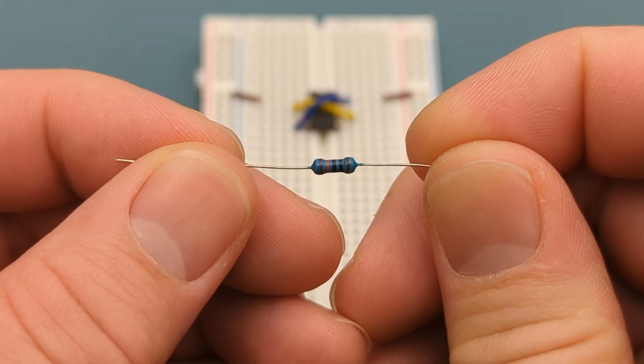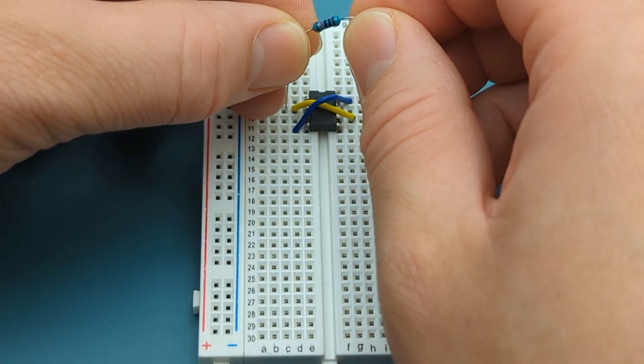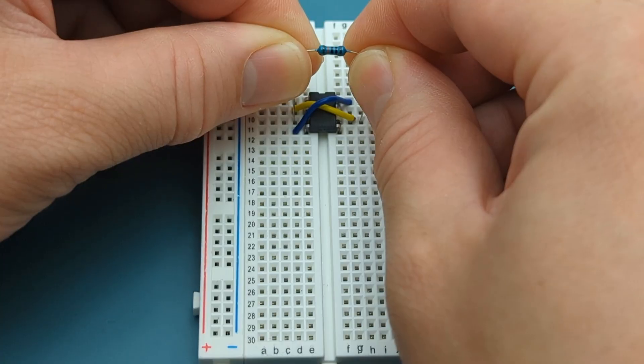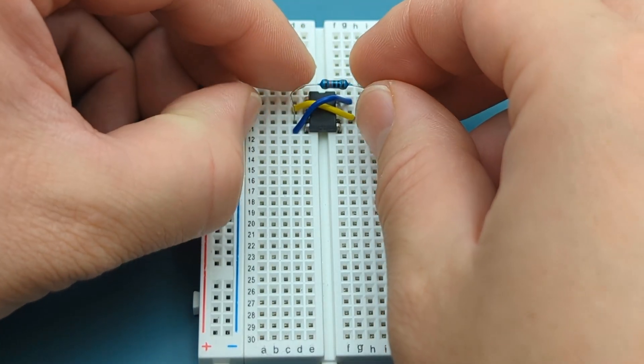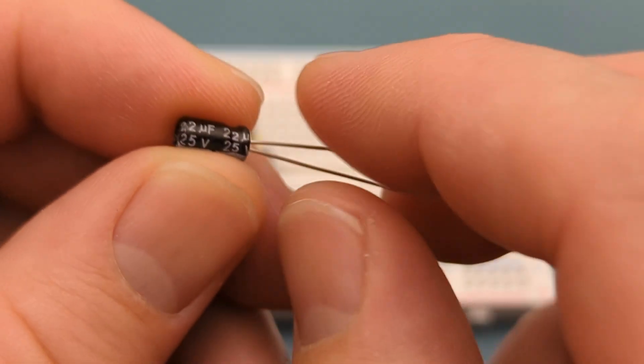Bend the ends of a 100-kilo-ohm resistor. Insert the 100-kilo-ohm resistor into pin 3 or output and pin 6 or threshold. Insert a 22-microfarad capacitor into pin 2 or trigger and the negative rail.